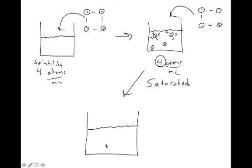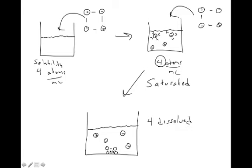The situation we would have is the undissolved crystal sitting at the bottom, while our original four atoms are dissociated and free to move around. So we have four dissolved atoms and four undissolved atoms.